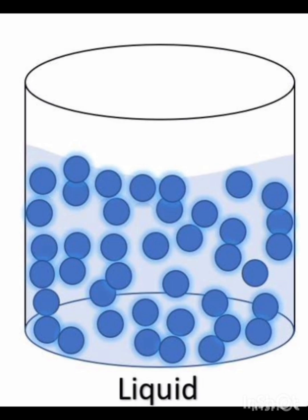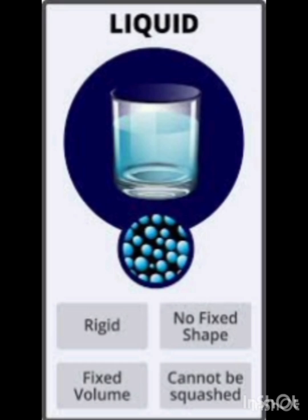Properties of liquid: They have a definite, fixed volume. Unlike solids, they do not have a fixed shape. In terms of compressibility, their volume does not change significantly under pressure. The fourth property of liquid is flowing — liquids can flow, allowing them to take the shape of their container.